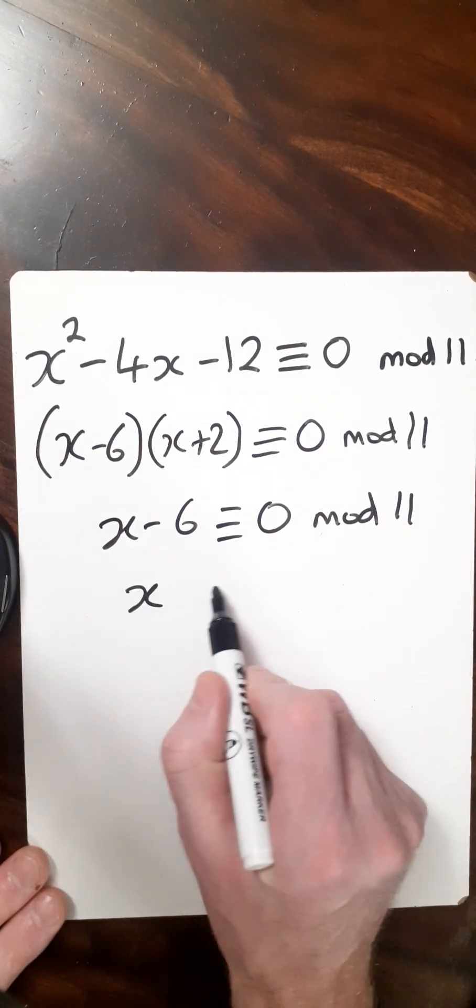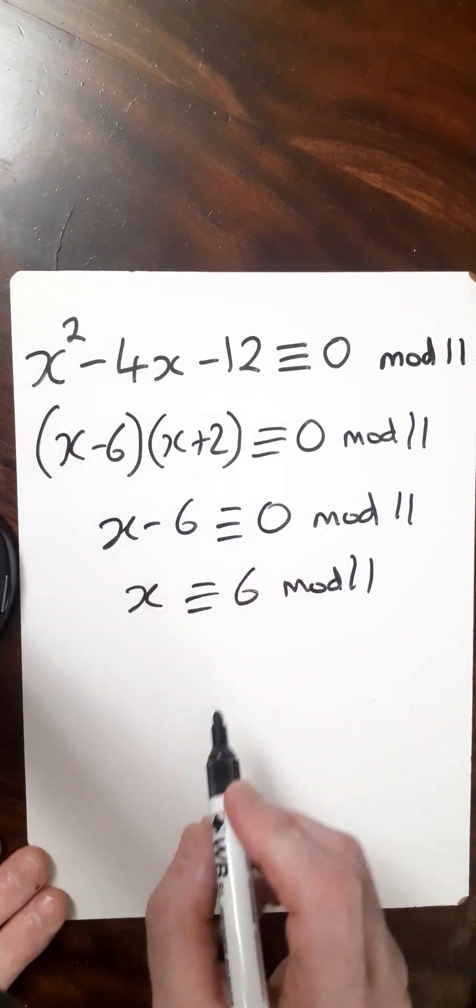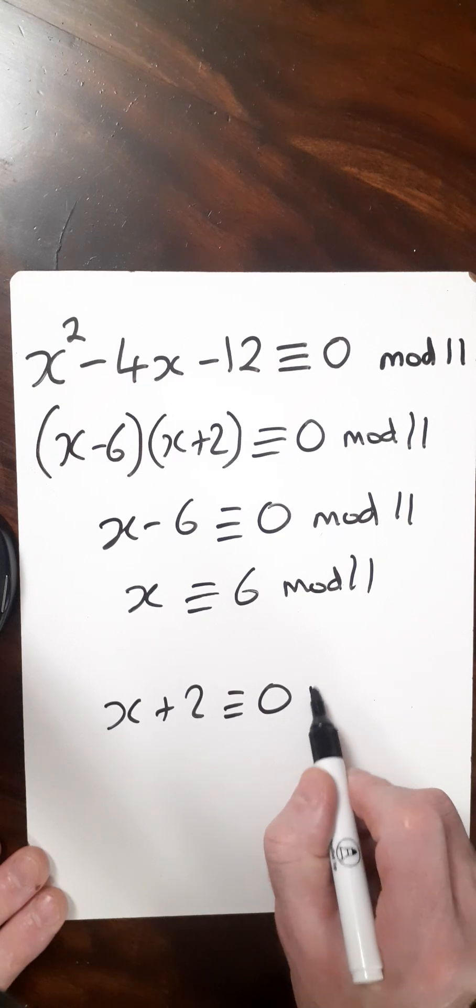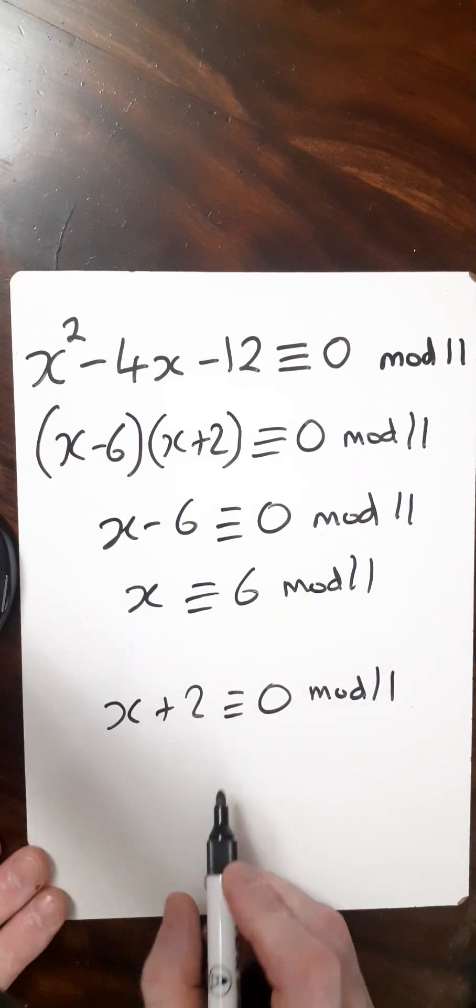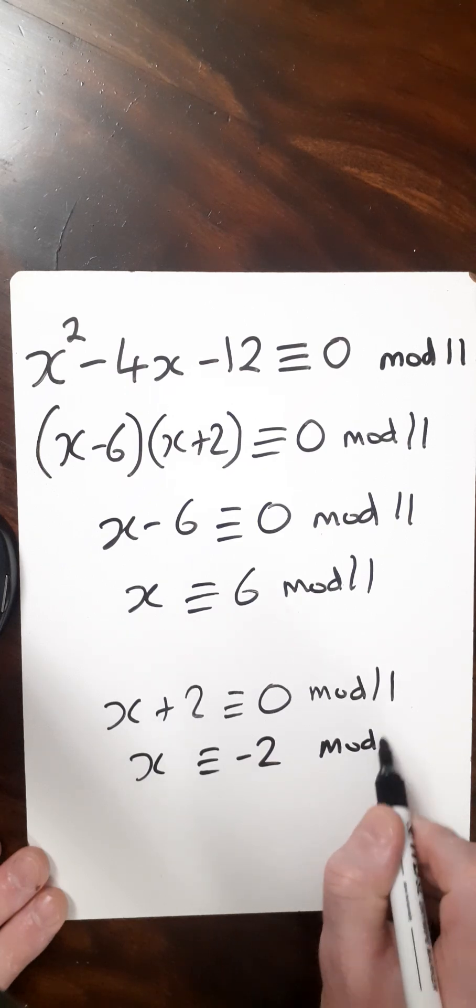which means x ≡ 6 (mod 11). For the other factor, x + 2 ≡ 0 (mod 11), so x ≡ -2 (mod 11).